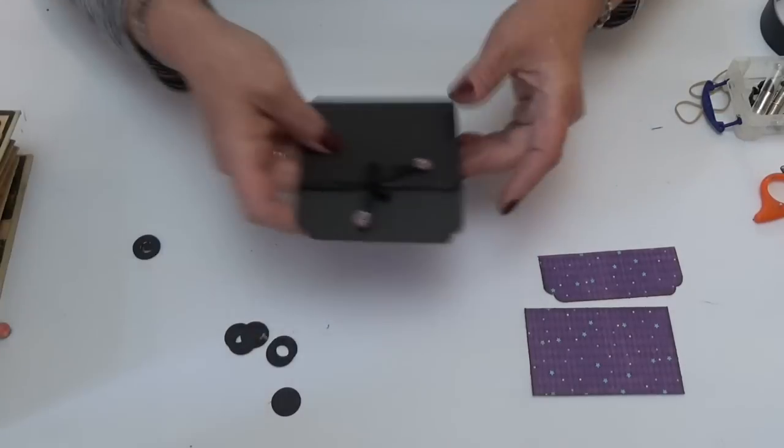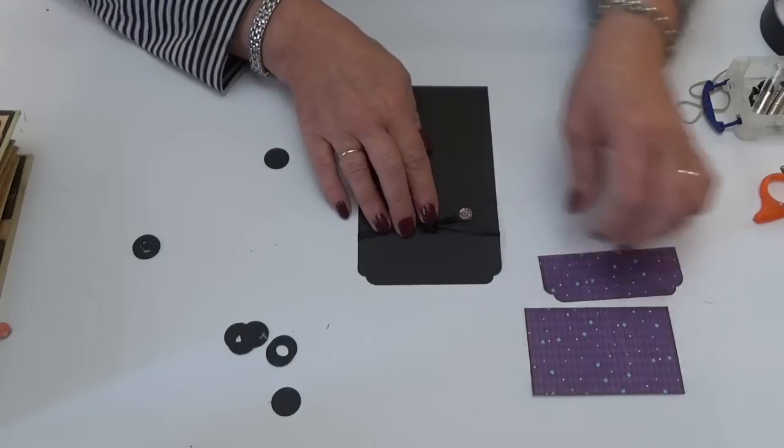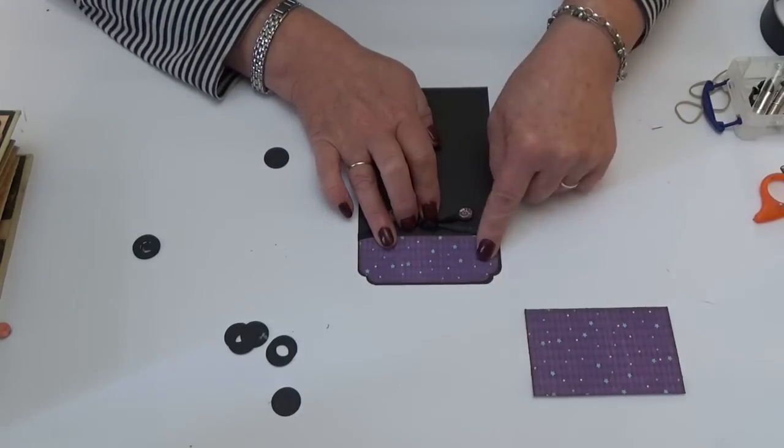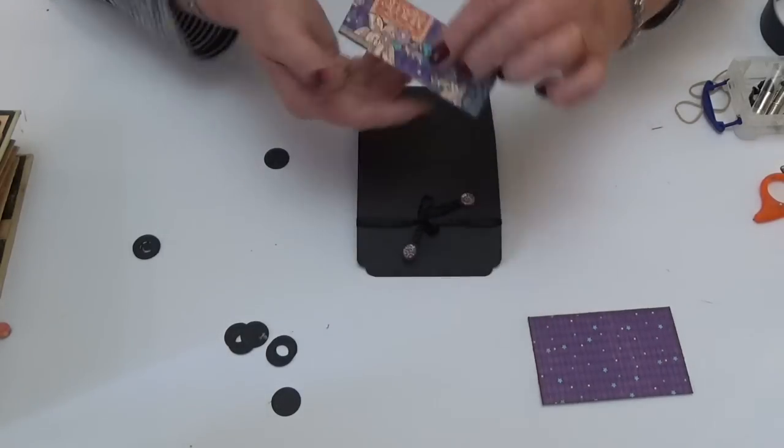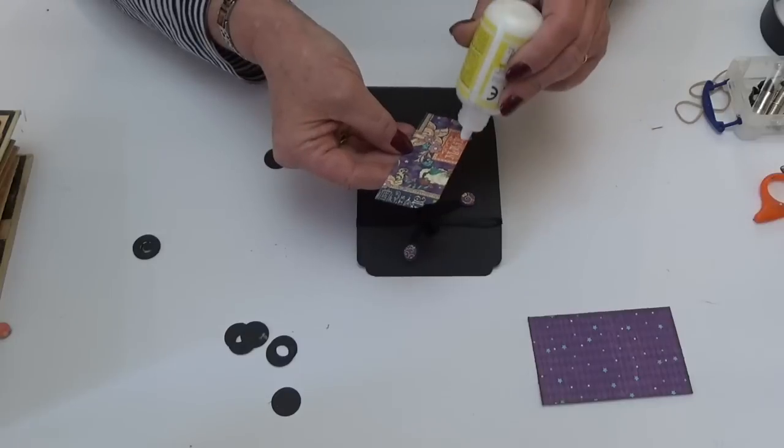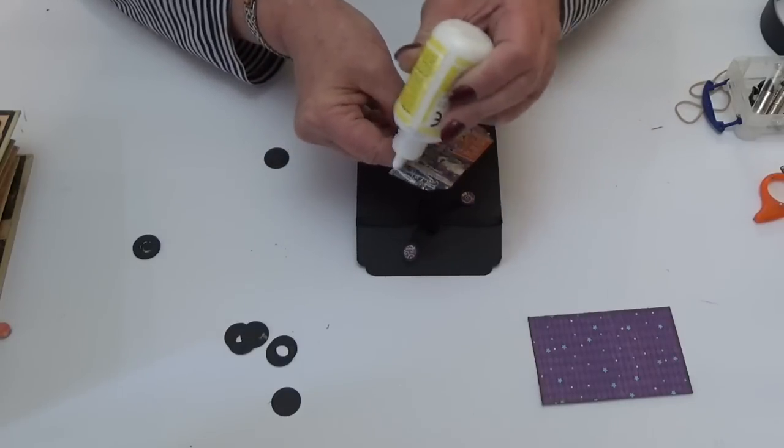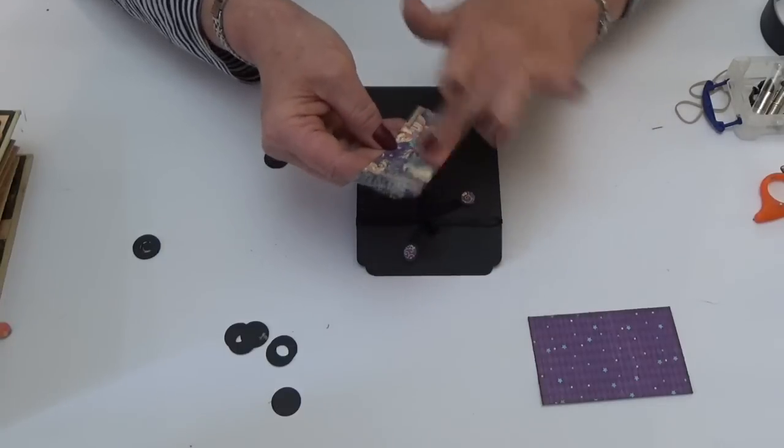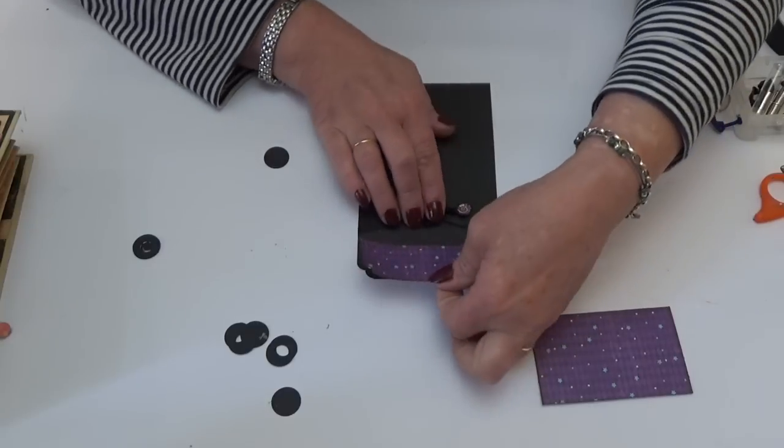So before you start adding the magnets, I'm going to put the paper on the top section of my pocket piece. So I've already inked the edges and shaped the corners. I love the paper I'm using—it's from the Midnight Masquerade collection by Graphic 45. I love the turquoise and the purple.